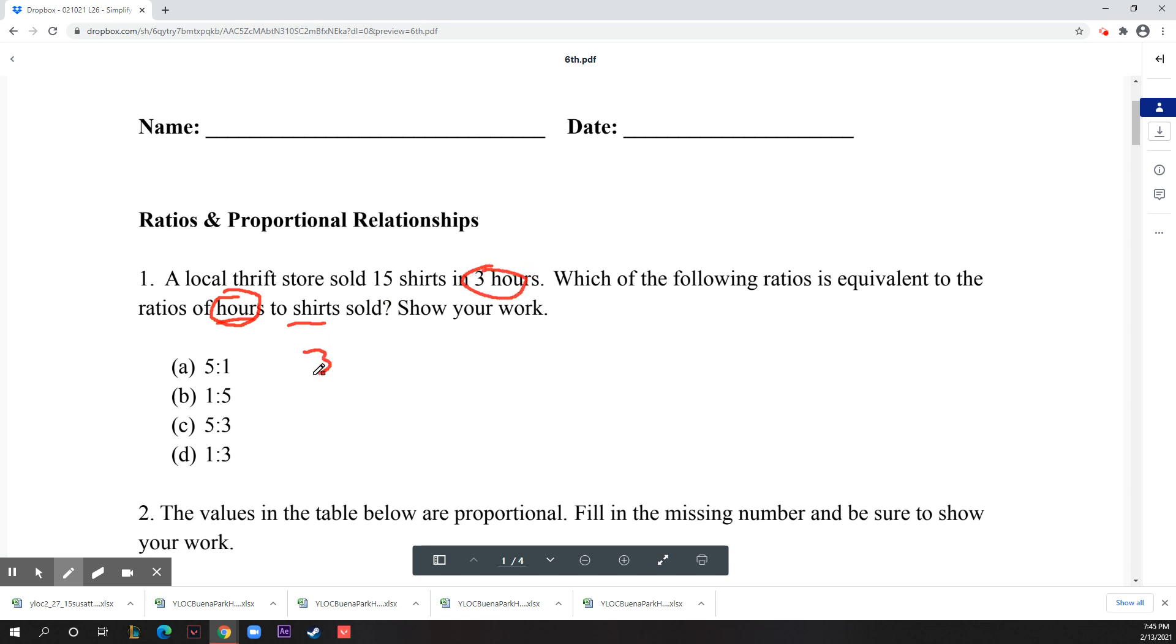Three goes first, and then shirts is second - there are 15 shirts, so it's 3 to 15. You have to make sure you get this right because if you didn't look at the last bit and just looked at the first sentence '15 shirts in three hours,' you might have done 15:3, but they're asking for 3:15. Now you want to reduce this - divide everything by three because they're both divisible by three, so you get 1 and 5. The answer would be B.